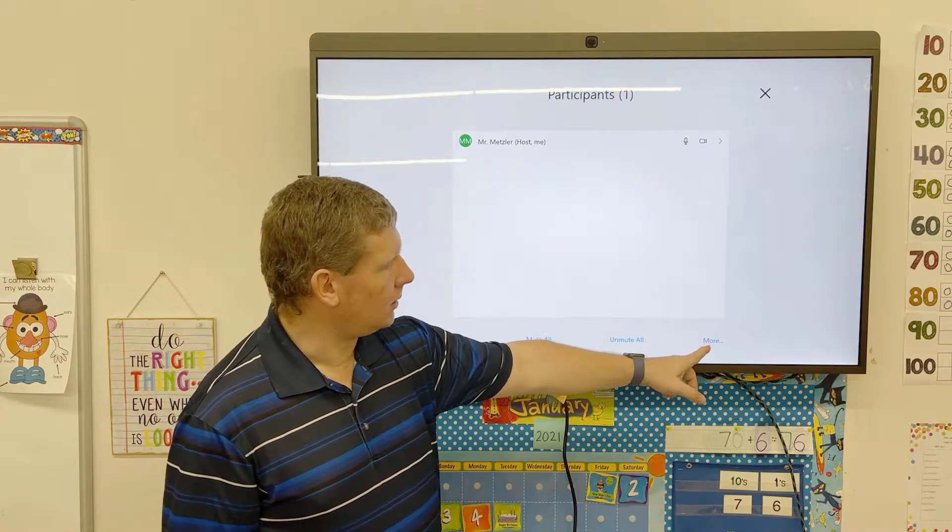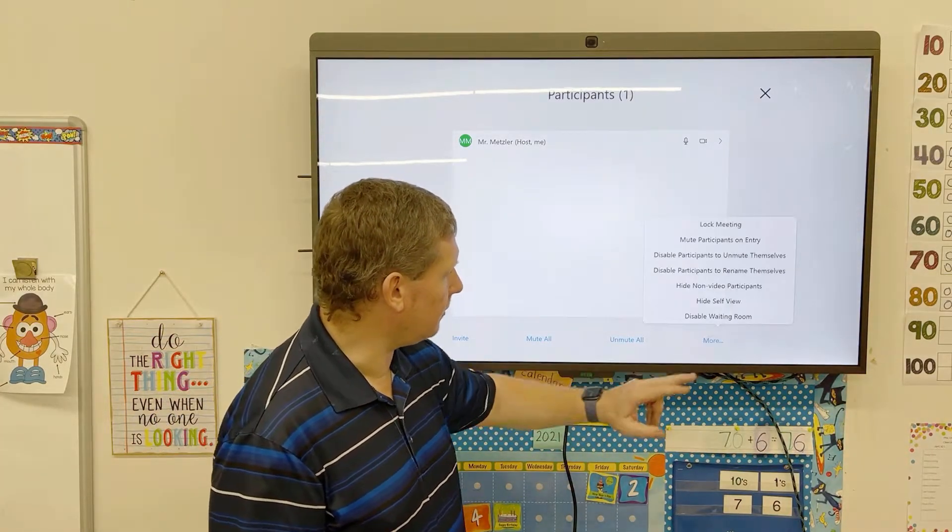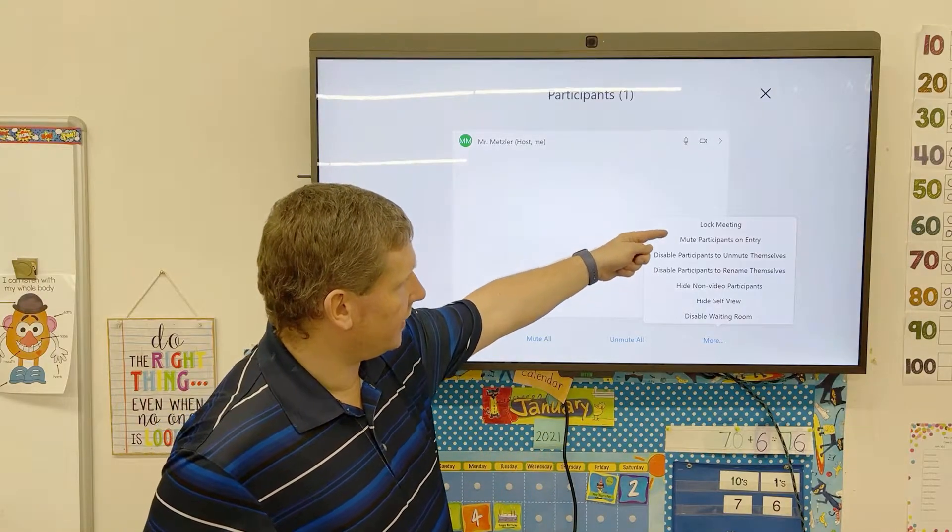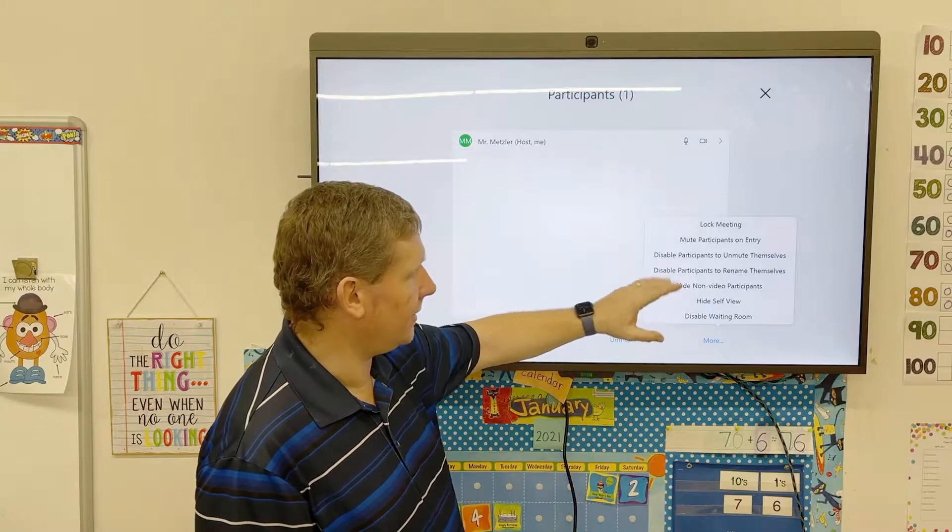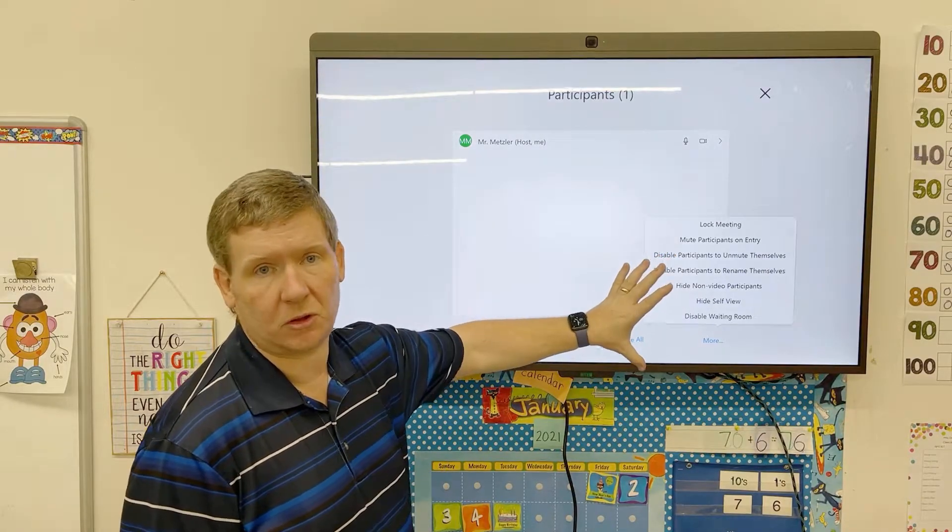So I'm going to click on Manage Participants, and you're going to see Invite, Mute All, Unmute All, or More. Under the More, it gives you a bunch of other features. You can lock the meeting, mute participants on entry. Again, I'm going to have another video that shows those pieces.